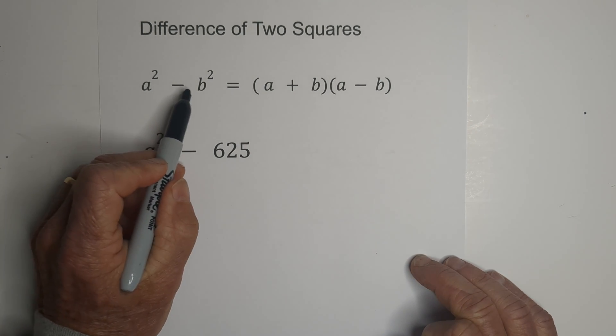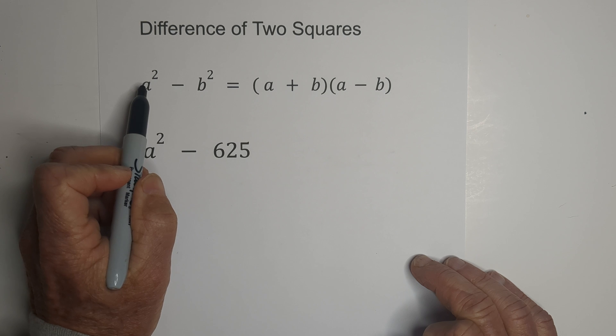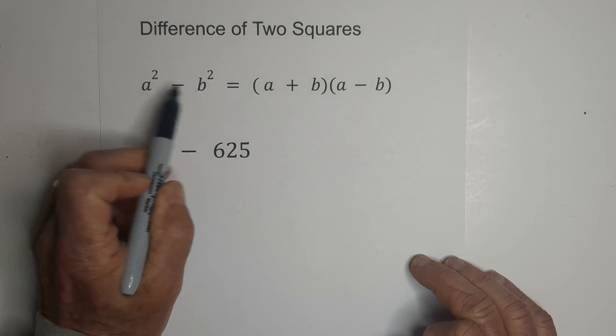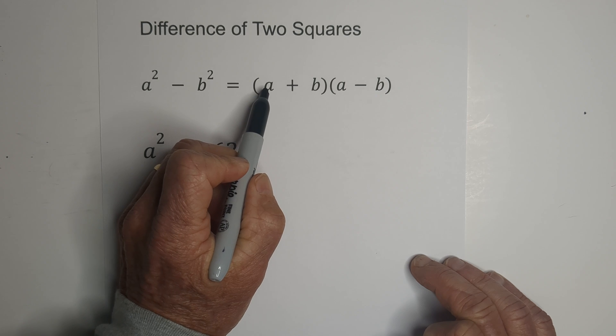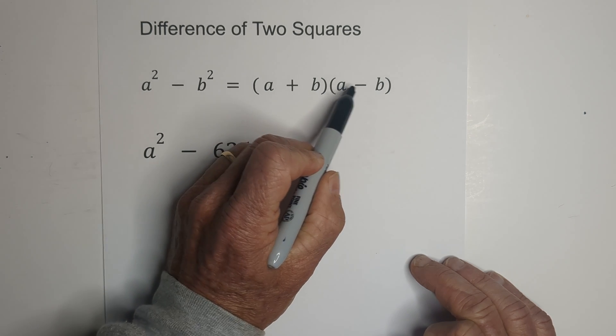If you have a squared minus b squared, we have a squared subtracted by b squared, so it's a difference of two squares. You can rewrite it as a plus b times a minus b.